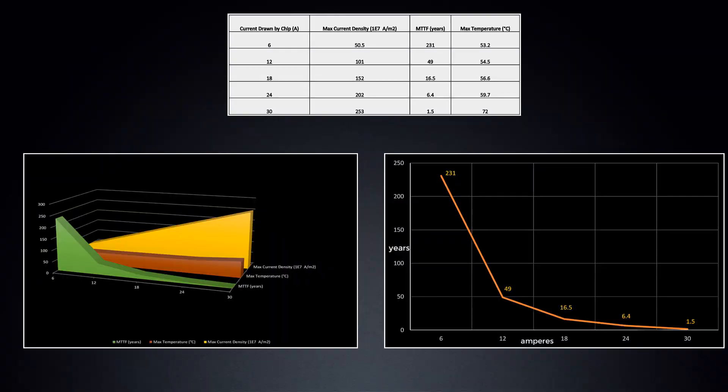When the chip draws 6 amps, the mean time to failure is over 200 years. Nothing to worry about. But if the chip were to draw 24 amps, its lifespan reduces to just over 6 years, and at 30 amps it drops to 1.5 years.